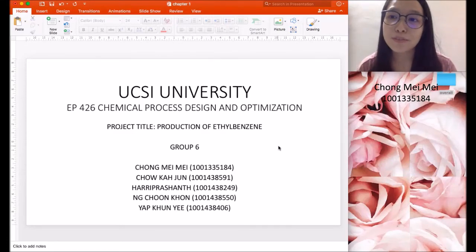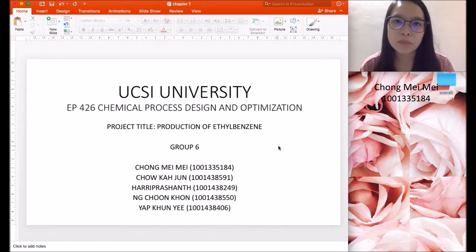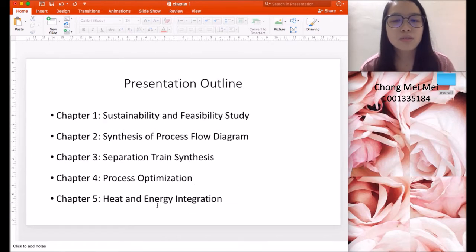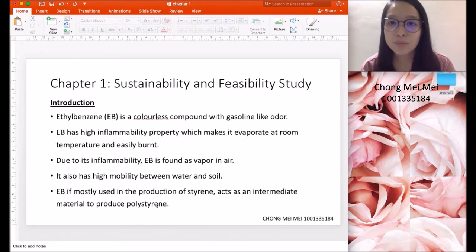Hi everyone, I'm Chong Mei Mei from UCSI University and this is a video presentation for chemical and process design and optimization. We are group 6, with a project title Production of Ethyl Benzene. In this presentation, we will cover chapter 1 to chapter 5.